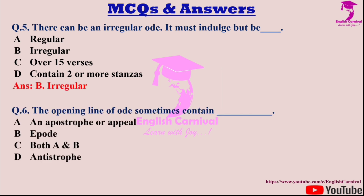Question six: The opening line of an ode sometimes contains — dash. Options are A: An apostrophe or appeal; B: Epode; C: Both A and B; and D: Antistrophe. Correct answer is A — an apostrophe or appeal.